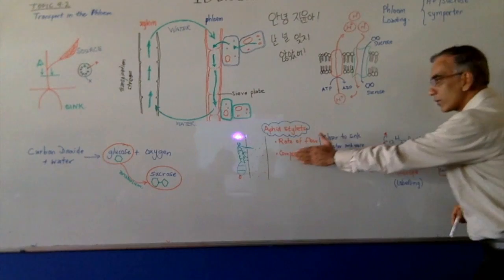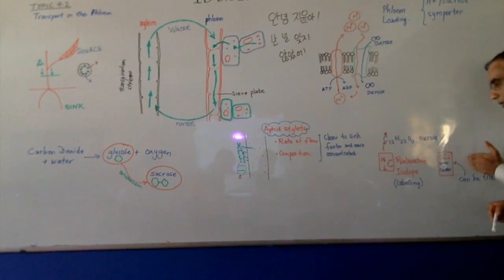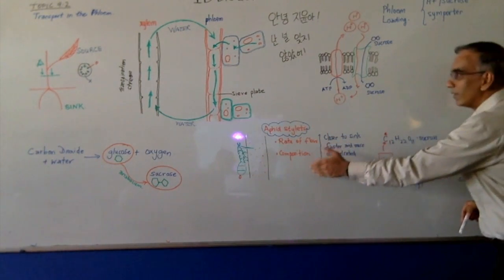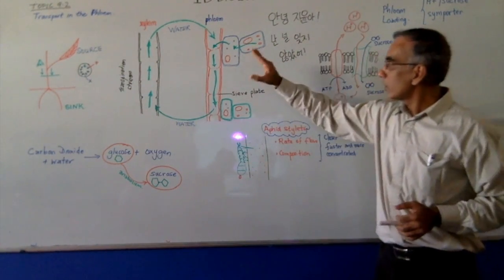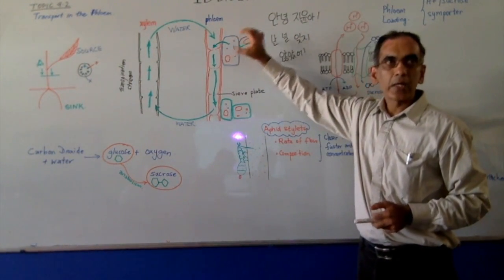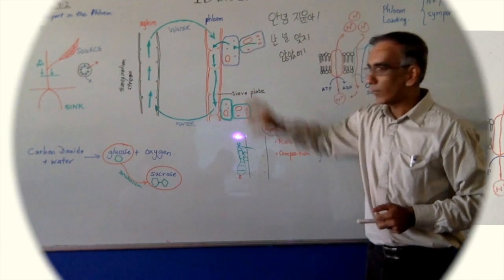So these are two sources of evidence to support the mechanism that we speak about, or the way that sugars get transported in the phloem. So now let's go in and take a closer look at how sugars are transported in the phloem.